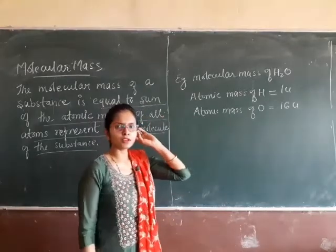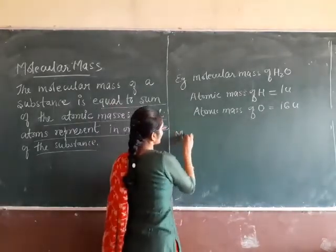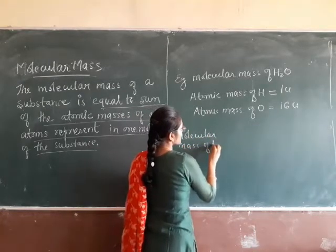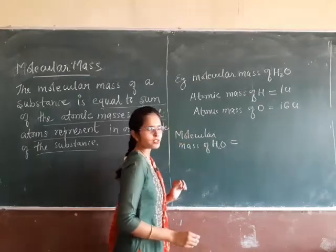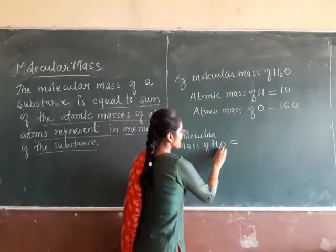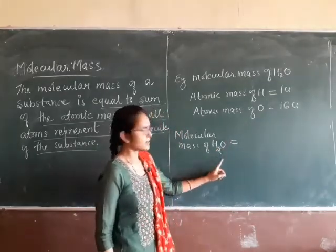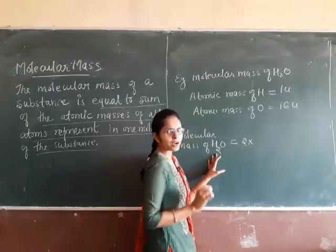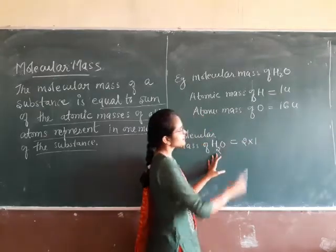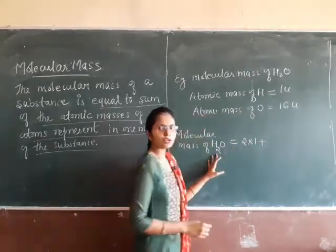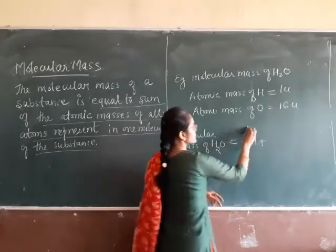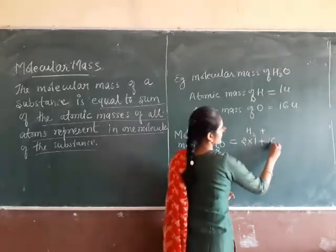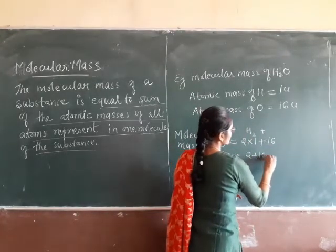Molecular mass of water: H2O has 2 hydrogen atoms, so 2 × atomic mass of hydrogen = 2 × 1 = 2. For O, the mass is 16. So total is 2 + 16 = 18U. The molecular mass of water is 18U. We multiplied because we have 2 hydrogen atoms, each with mass 1U, and 1 oxygen atom with mass 16U.